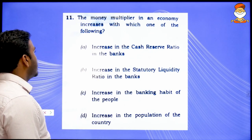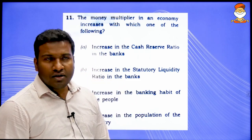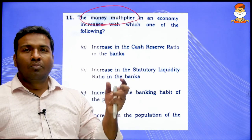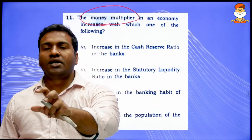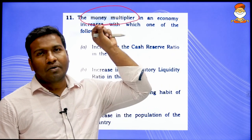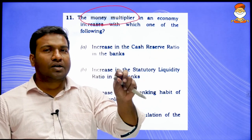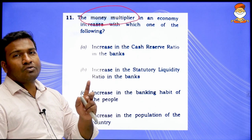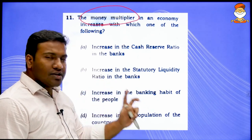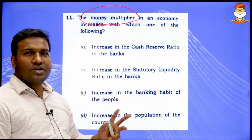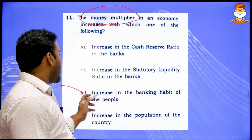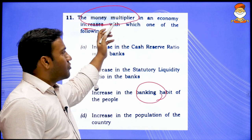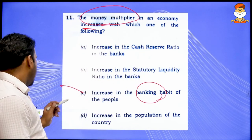The money multiplier increases with which of the following? This is a basic NCERT concept — money multiplier happens when more people deposit and withdraw from banks. When one rupee from RBI goes to another bank, and people take it and keep it in other banks, the multiplier effect increases. So 'increase in banking habit of the people' is correct — option C. Read all NCERTs for command on concepts and basics.